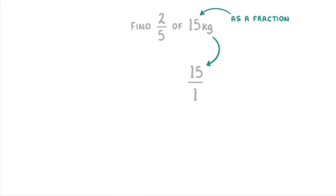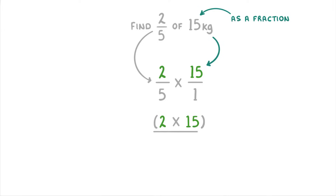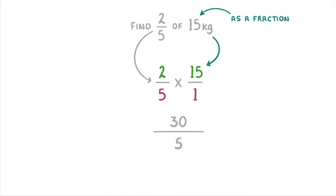Next, we have to multiply the two fractions together. So 2 over 5 times 15 over 1, which means 2 times 15 divided by 5 times 1, or 30 over 5, which is 6. So the answer is 6 kilos.